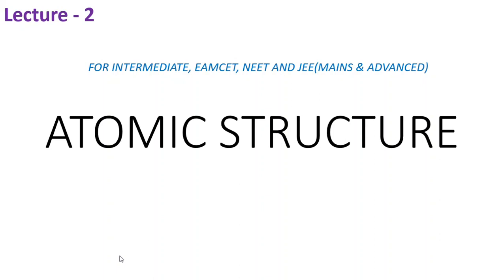Hello friends, welcome to our channel Anand Academy of Predication. We have been discussing the chapter atomic structure. In the last lecture we discussed what is an atom, how the concept of atoms existed since the time of early Greek and Indian philosophers, what is Dalton's atomic theory and its drawbacks, and how J.J. Thomson discovered electrons using his cathode ray tube experiment.